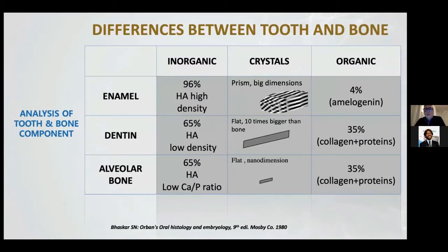The difference between the tooth and bone is very small. For example, enamel is completely different from our bone because it has 96% HA with high density, and the crystals of HA are a prism with big dimensions.